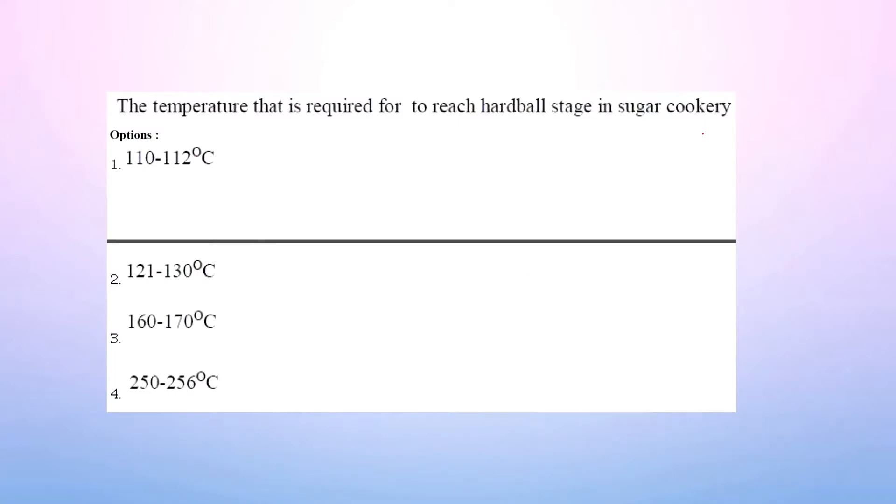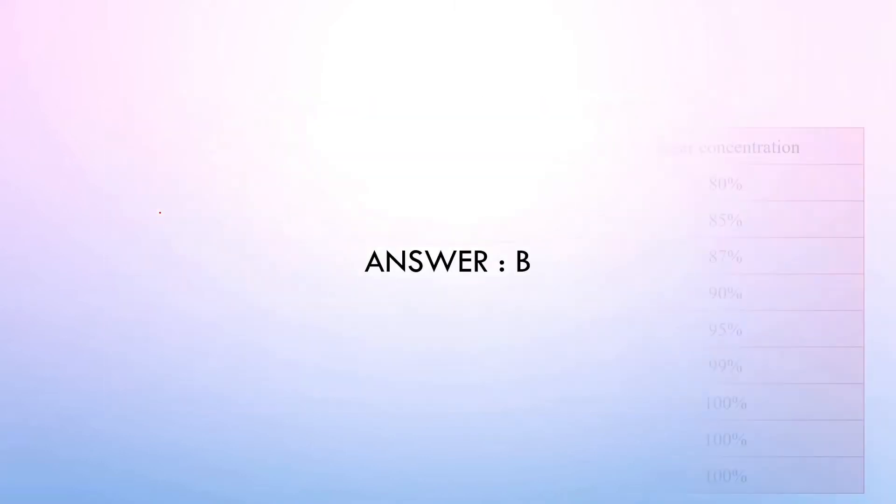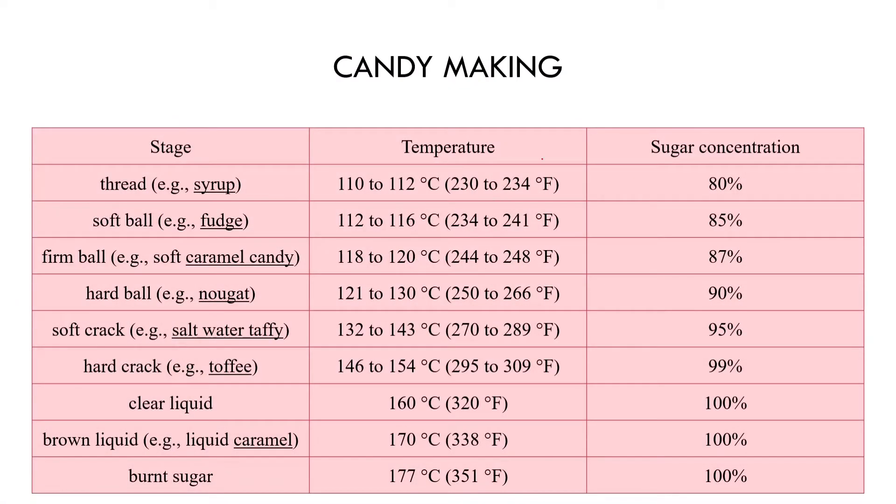Question: The temperature that is required to reach hardball stage in sugar cookery. Options: 110 to 112 degrees centigrade, 121 to 130 degrees centigrade, 160 to 170 degrees centigrade, 250 to 256 degrees centigrade. Another memory-based question. The correct option is option B, that is 121 to 130 degrees centigrade. Here, there are different candy-making processes. Thread stage is 110 to 112 degrees centigrade.